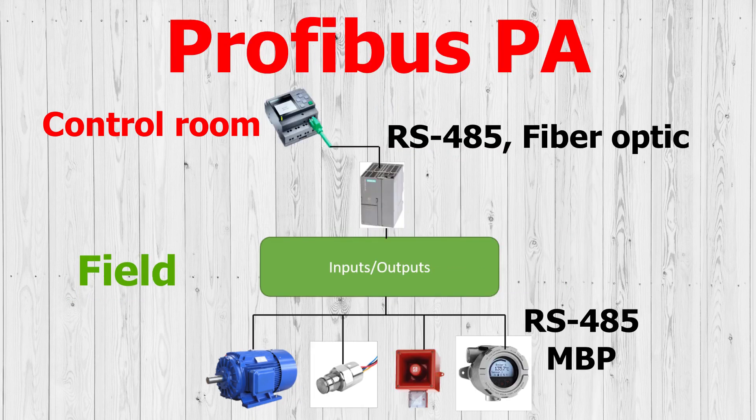Then, Profibus PA, or Process Automation, was created, which can be intrinsically safe or explosion proof. What differentiates it from Profibus DP is that all the cables that go to each of the instruments for their power supply and communication are combined into just one, which saves even more on wiring.